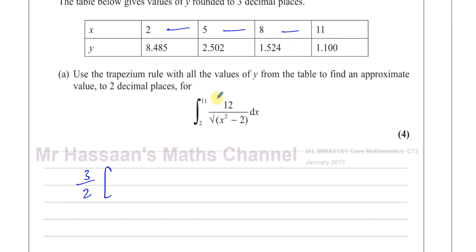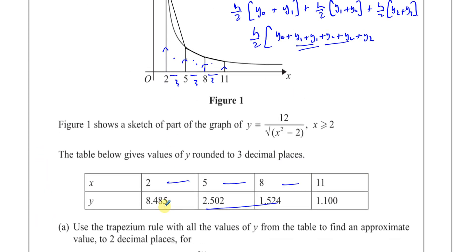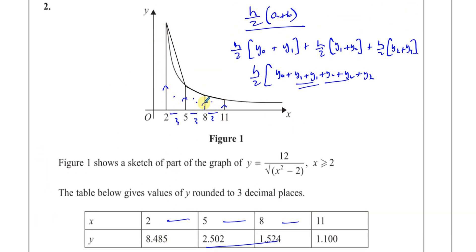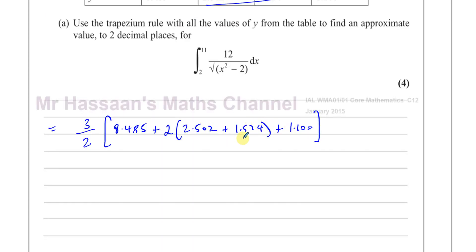The first and last y values are used once. So you have 8.485, then the middle values are each used twice: 2 times 2.502 plus 1.524. Then the last value, 1.100, is used once. The first and last are used once and the two middle ones twice because they each belong to two trapeziums. That gives us our approximate value for the integral.